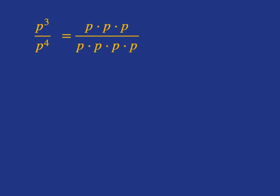At the top, we've got p times p times p, and at the bottom of the fraction, p times p times p times p. We can then cancel out the three p's on the top with those on the bottom, and we'll get 1 over p.